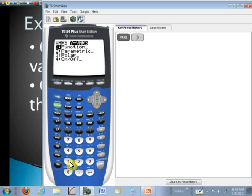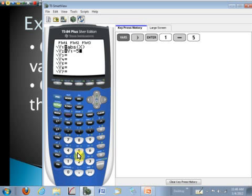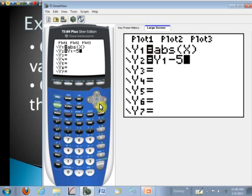That's kind of a complicated series of keystrokes for students, I think. So that's where the key press history can really help out. And we want to subtract 5 from that. And notice we can go ahead and go back to our large screen and graph both of those functions in the same viewing window. So that's a nice use of the key press history and the large screen.